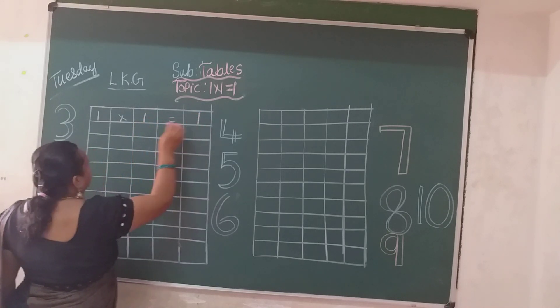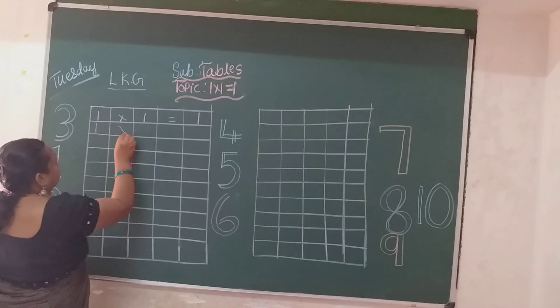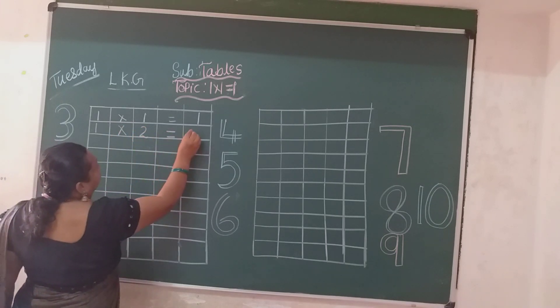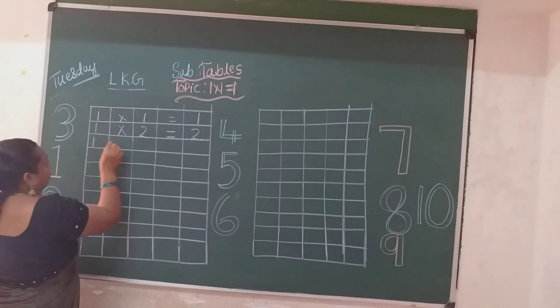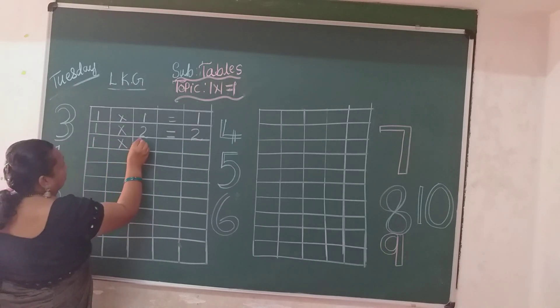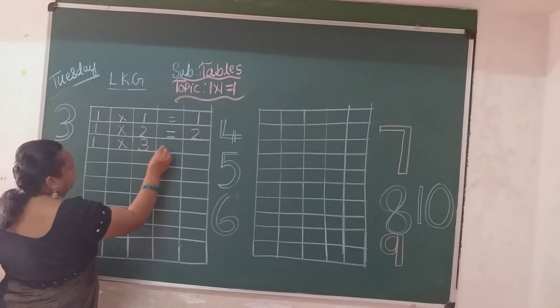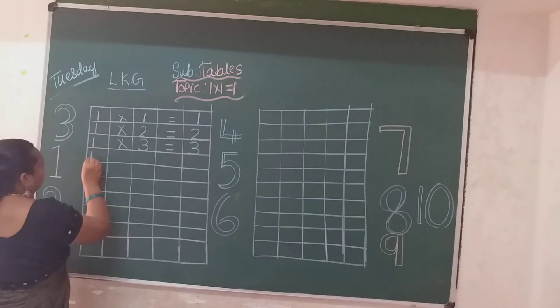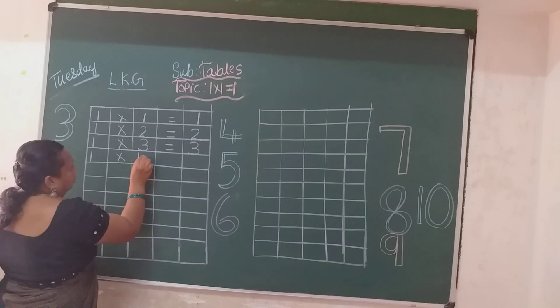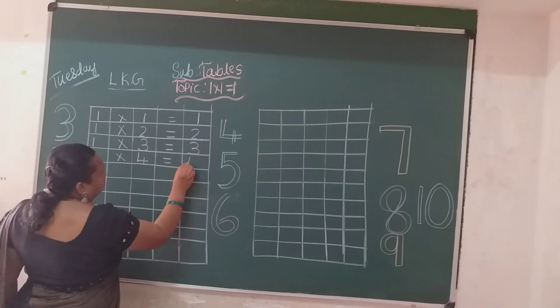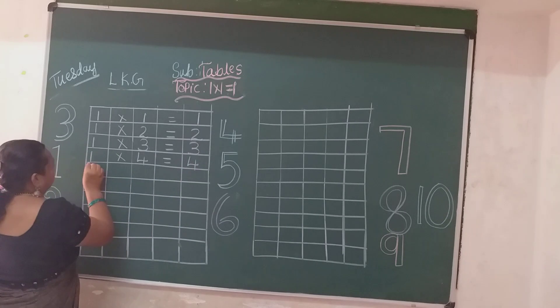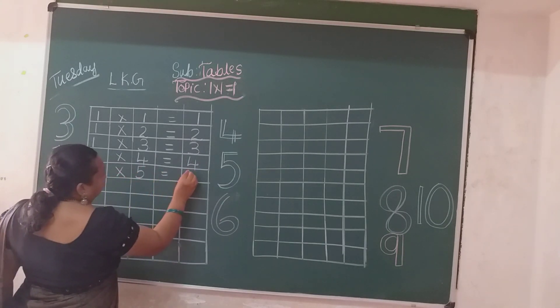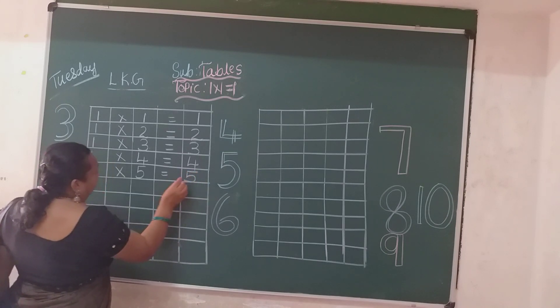One ones are one. One twos are two. One threes are three. One fours are four. One fives are five.